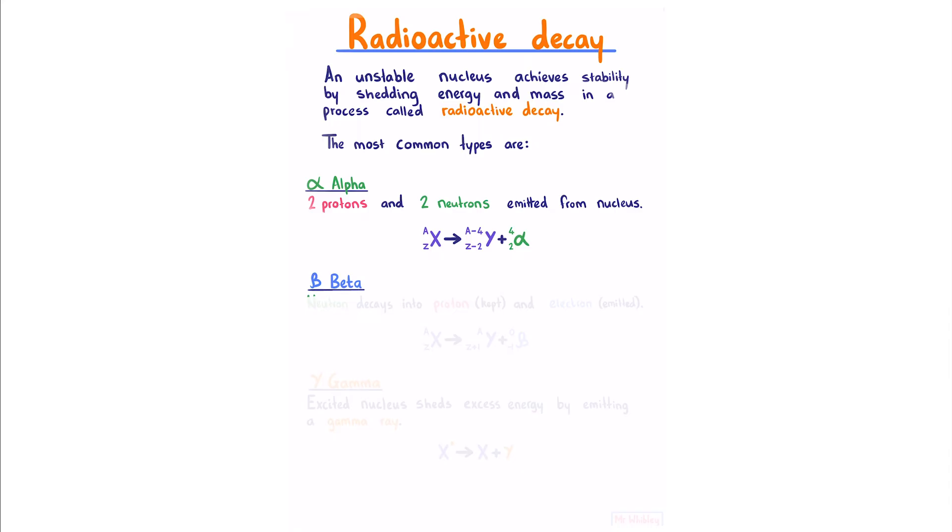Beta decay is when a neutron decays into a proton, which is kept, and an electron, which is emitted. When our nucleus decays, our beta particle has no atomic mass and therefore does not affect the atomic mass. But because it has an atomic number of negative one, we take away negative one from our atomic number, which is the same as adding one.